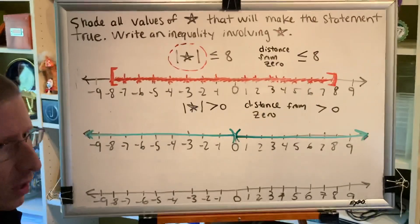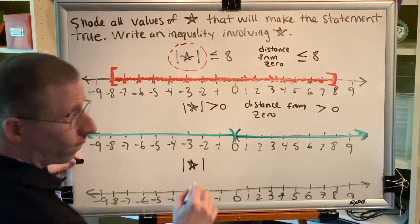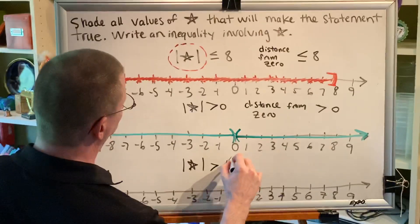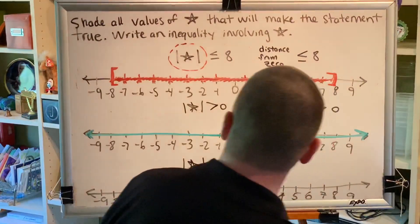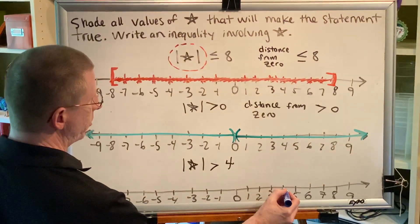Alright, let's do one last one. Absolute value of star is greater than 4. Okay, well, that just means that if you start at 0 and you travel 1, 2, 3, 4 steps to the right, anything beyond that would be greater.